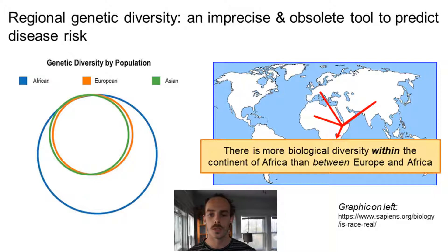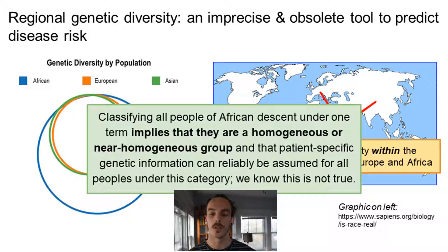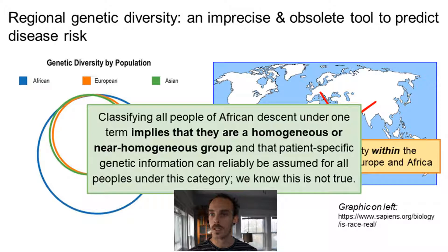This brings me to regional genetic diversity. Researchers at the Human Genome Project and many others have shown that there is actually more genetic diversity within the African diaspora than there is between Africa and Europe, or between Africa and Asia. Therefore, classifying all people of African descent under one term implies they're a homogenous or near-homogenous group, and that patient-specific genetic information can reliably be assumed for all patients under this category. However, we know that's not true — there's more genetic diversity within the continent of Africa than between the continents of Europe and Africa, Asia and Africa, or the Americas and Africa.